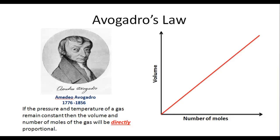Hey you guys, this is Mr. Millings, and today we're going to talk about Avogadro's Law. Amadeo Avogadro was an Italian scientist that lived in the 1700s and 1800s, and he stated that if the pressure and temperature of a gas remain constant, then the volume and number of moles of the gas will be directly proportional.